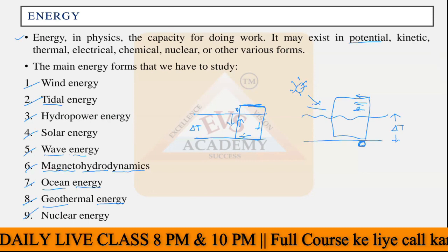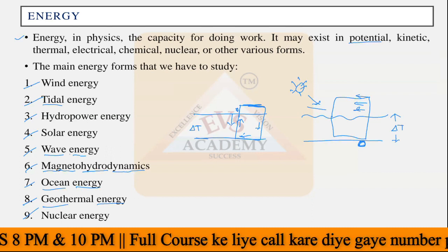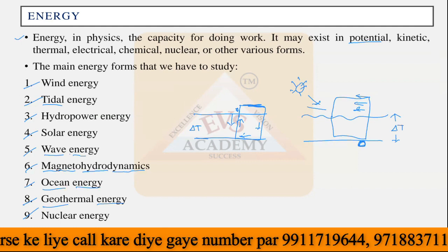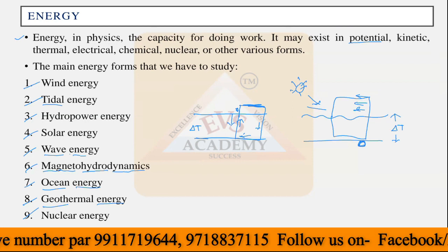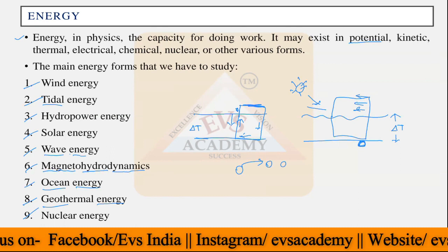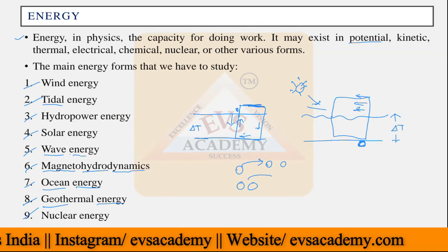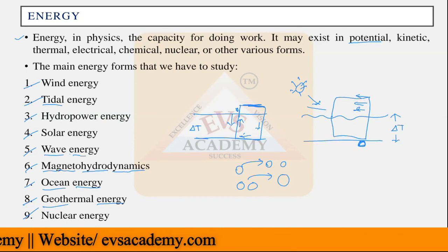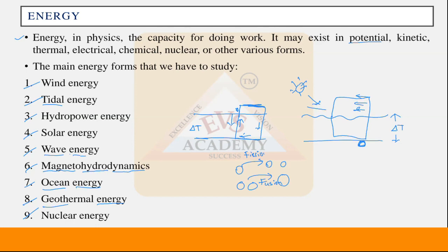The last energy we will discuss is nuclear energy. We will see both nuclear fission and nuclear fusion in detail. Fission means splitting one nuclear particle into different smaller particles, while fusion means combining two different nuclei to create one larger nucleus. We will cover how much energy can be created in fission and fusion reactions, what materials are used, which is a natural process and which is artificial, including numerical problems of nuclear energy.